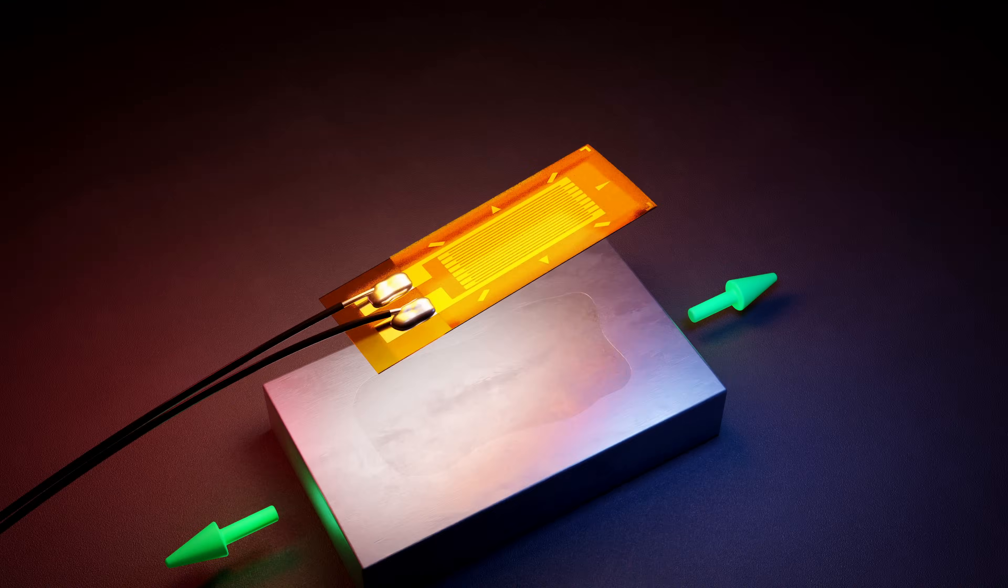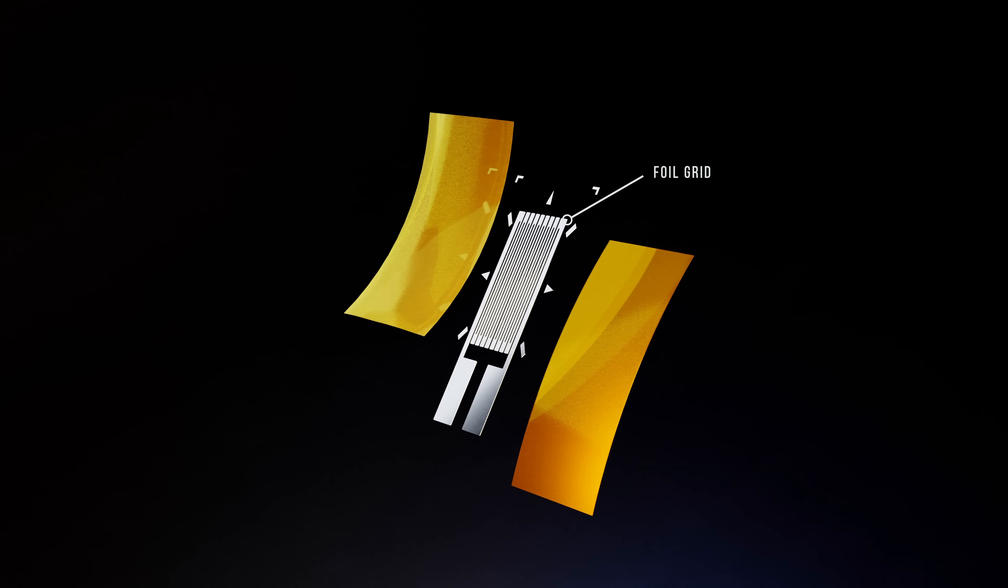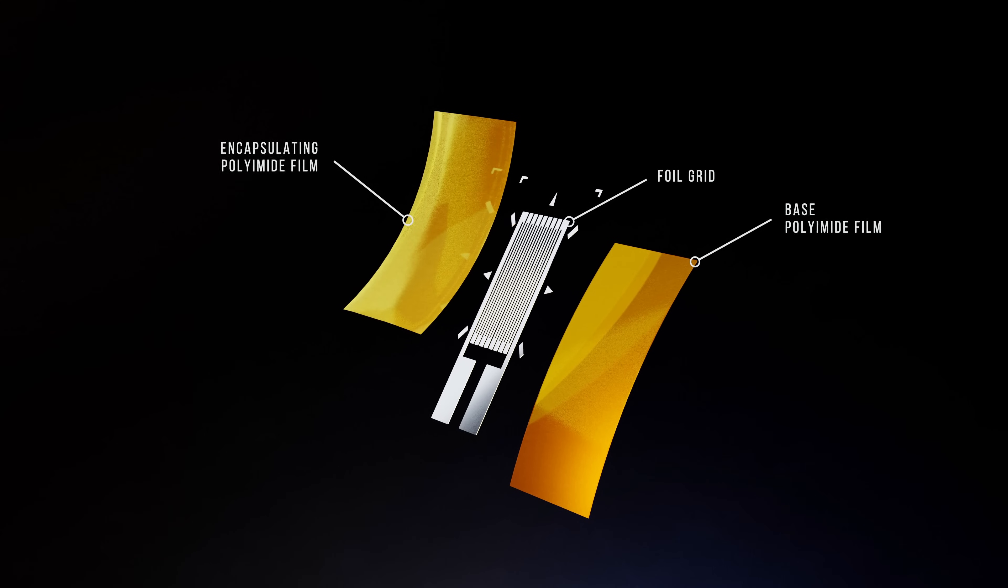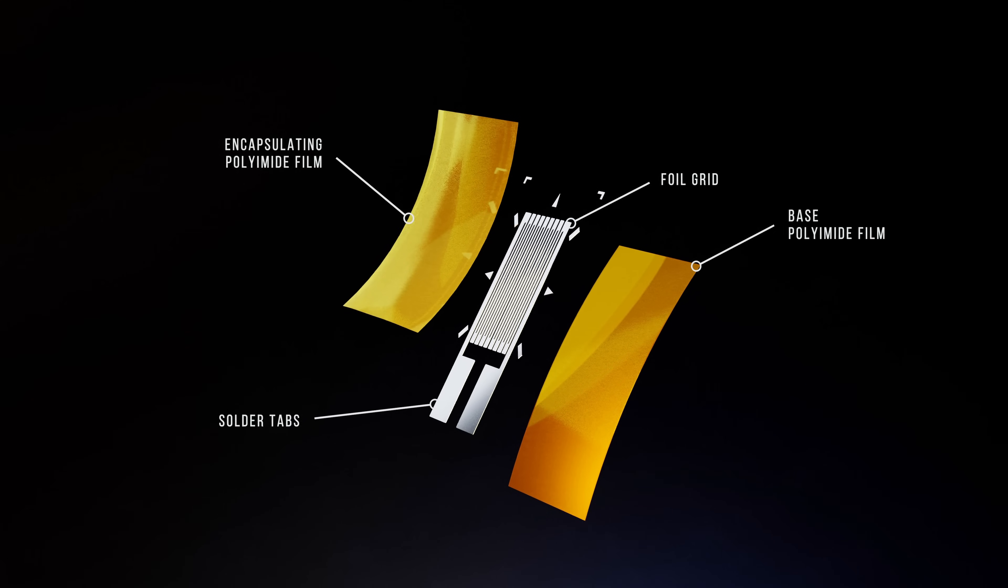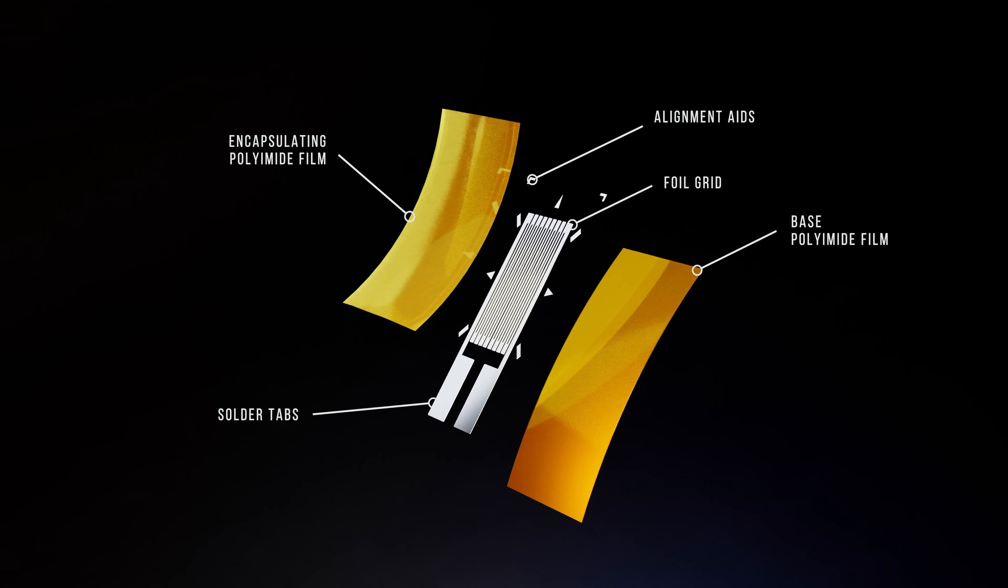The electrical resistance strain gauge is made of a conductive foil grid that's bonded to a very thin insulating plastic film. A separate film encapsulates and protects the foil grid. Solder tabs allow the measurement wiring to be soldered directly to the strain gauge, and markings on the foil help with alignment of the gauge during installation.